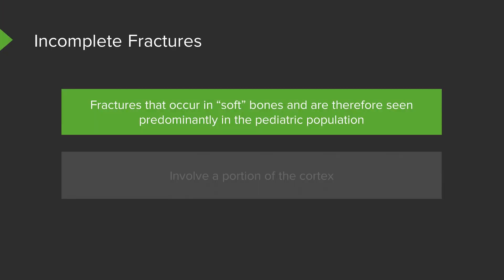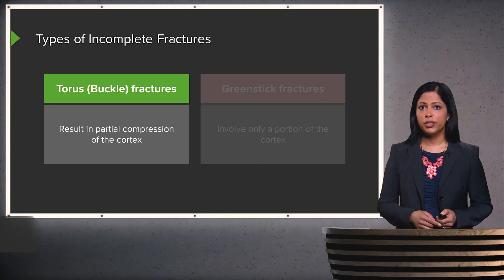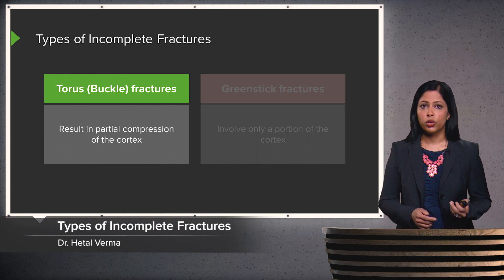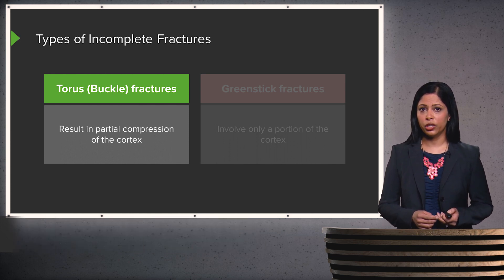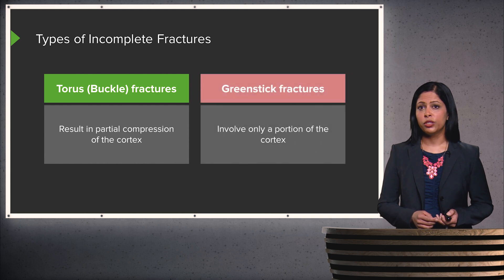An incomplete fracture is one that can occur in a soft bone, which is why it is seen most predominantly in the pediatric population. It involves only a portion of the cortex rather than the entire cortex. There are two major types: the torus or buckle fracture, which results in partial compression of the cortex, and the greenstick fracture, which involves only a portion of the cortex.